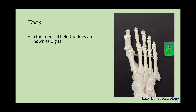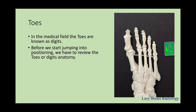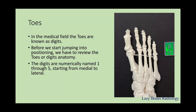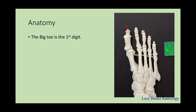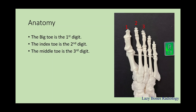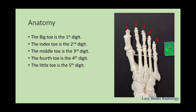The toes. In the medical field, the toes are also known as digits, like the fingers in the hand. But before we jump into the positioning, we first have to review the anatomy of the toes. The digits of the foot are numerically named one through five, starting from medial to lateral. It is very important not to confuse the order in which the digits are named. The big toe is also known as the first digit. The index toe is the second digit. The middle toe is the third digit. The fourth toe is the fourth digit. And the little toe or the pinky is known as the fifth digit.